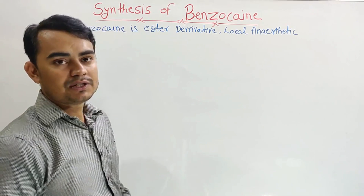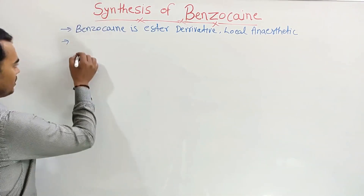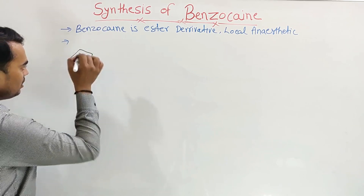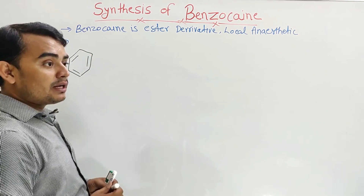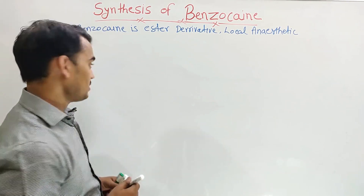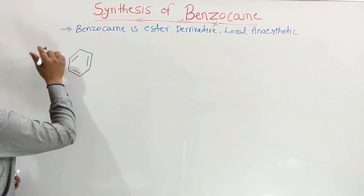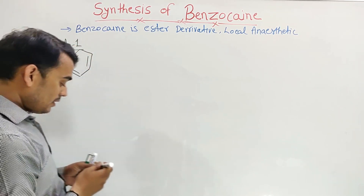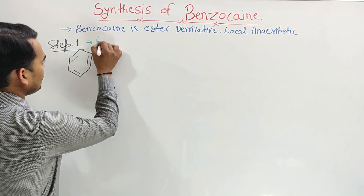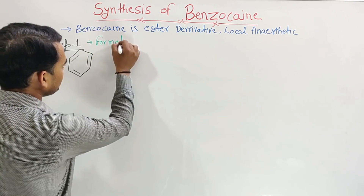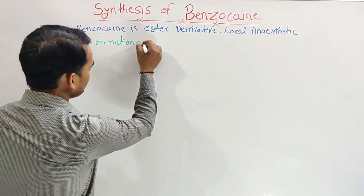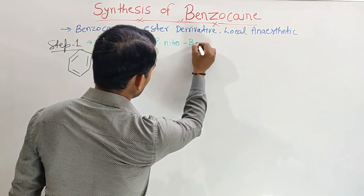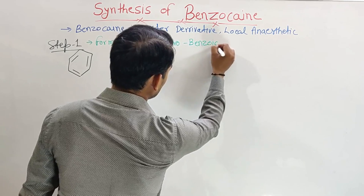The synthesis of benzocaine starts from toluene. So the starting material here is toluene. Benzocaine synthesis is a two-step process. In the first step, we have the formation of para nitro benzoic acid.